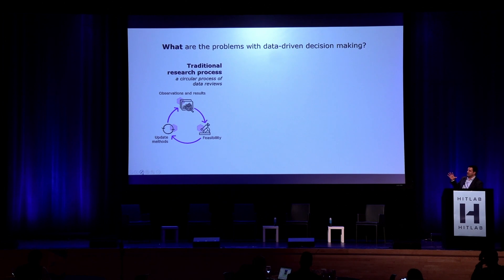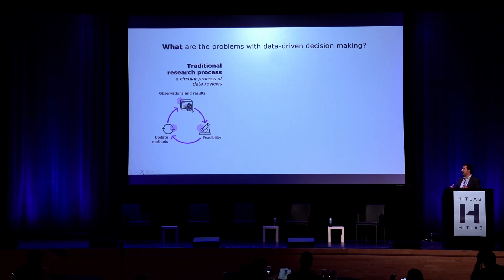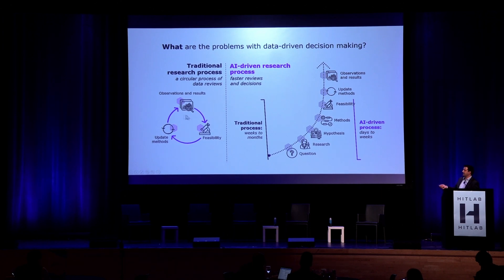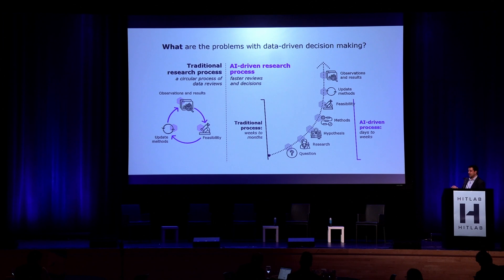The traditional research process is: you have a hypothesis based on some initial data, do a feasibility to see whether it's worthwhile to continue, go back and update your methods—and this is a circular process that can take quite long. What technology can help us with is reducing the time from question to feasibility—from weeks to months, down to days to weeks. It really speeds up the process of getting to a specific answer.